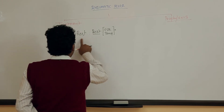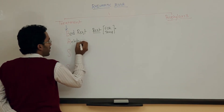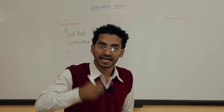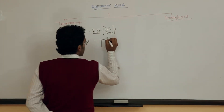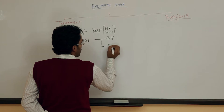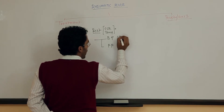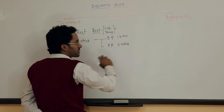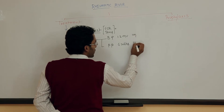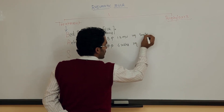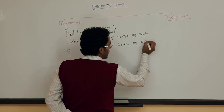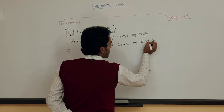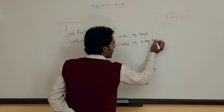The second point is antibiotics, in which we are targeting the group A beta-hemolytic streptococci. Here we can use benzathine penicillin or procaine penicillin. Benzathine penicillin is 1.2 million units and procaine penicillin is 6 lakhs units. Both are given IM — benzathine penicillin as a single dose, and procaine penicillin for 10 daily doses.